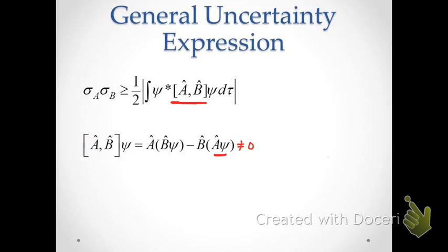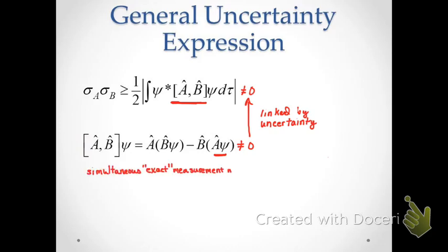If the commutator is not equal to zero, then the integral is not equal to zero, and we are limited by an uncertainty relationship — we cannot know both properties simultaneously with arbitrarily high precision. The observables linked under those circumstances are referred to as complementary observables. Position and momentum, as we talked about earlier, are complementary observables; we can't know both exactly at the same time, which means their commutator is not equal to zero.